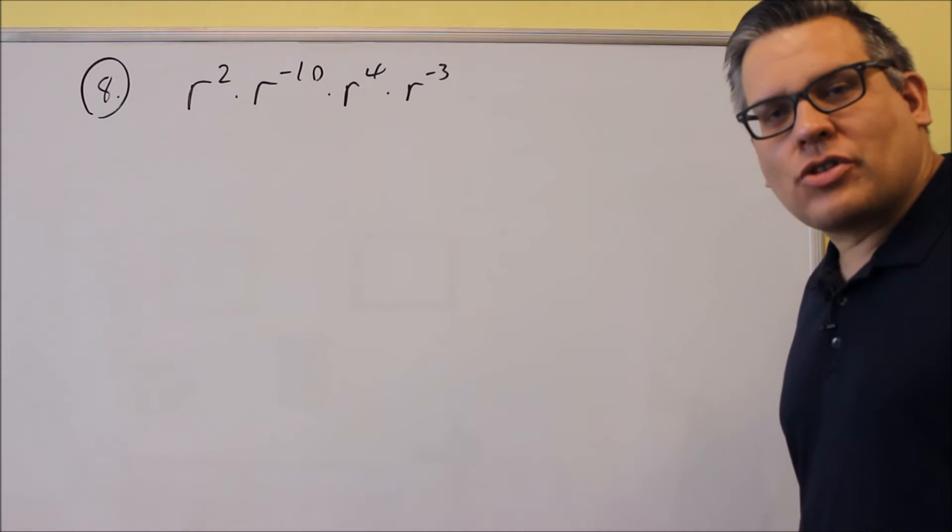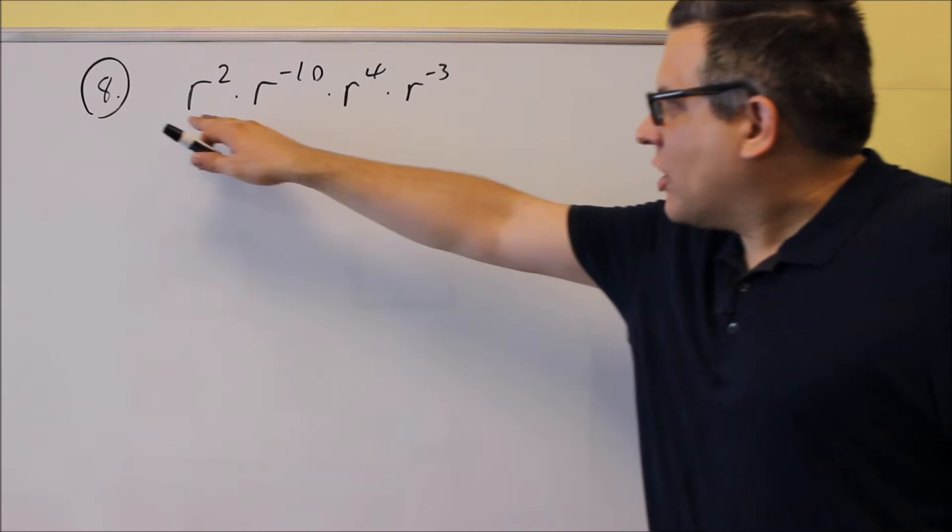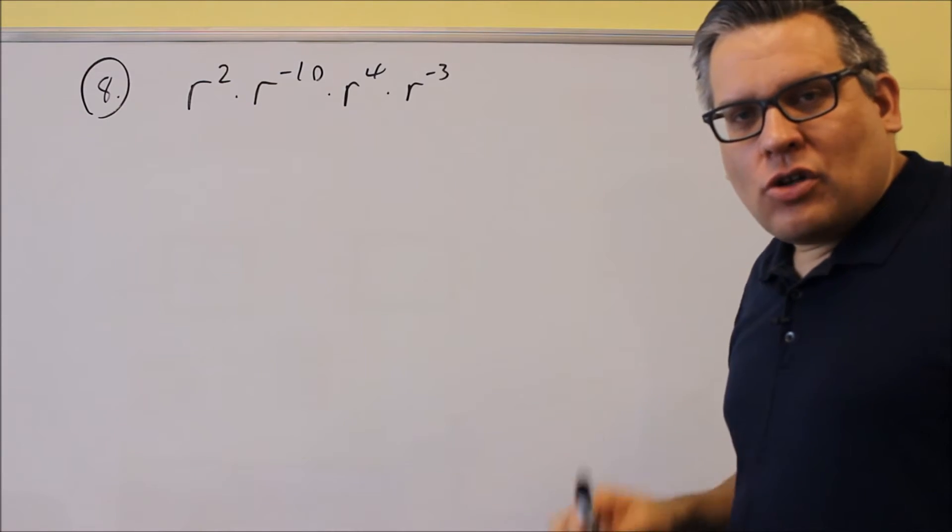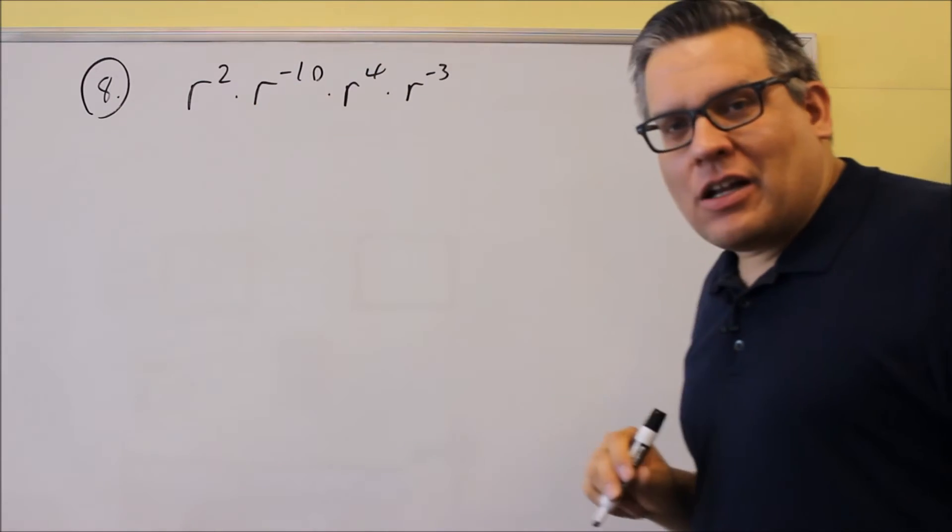So here's another one where we have to use exponent properties. In this case, we're multiplying a bunch of things together that have the same base. When that happens, you want to add the exponents.